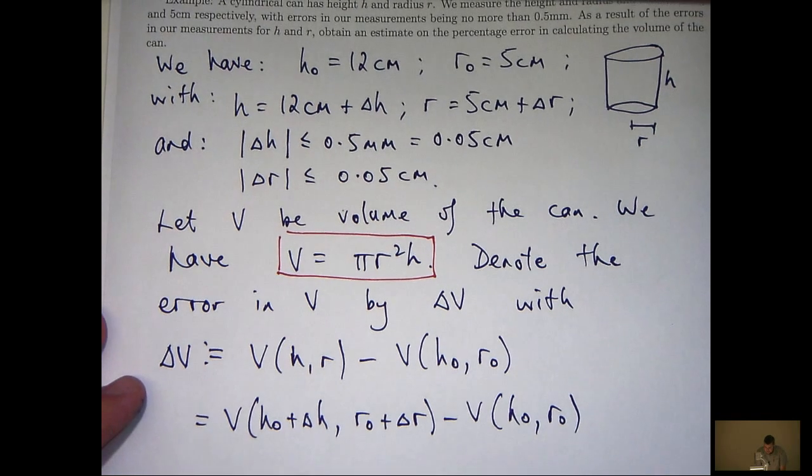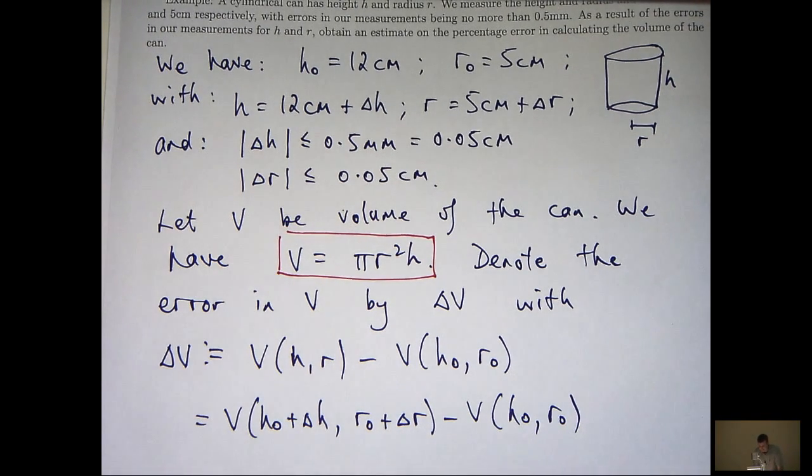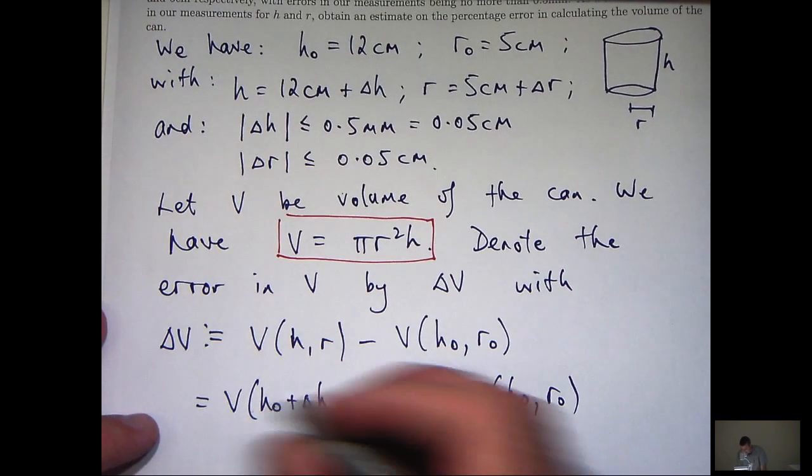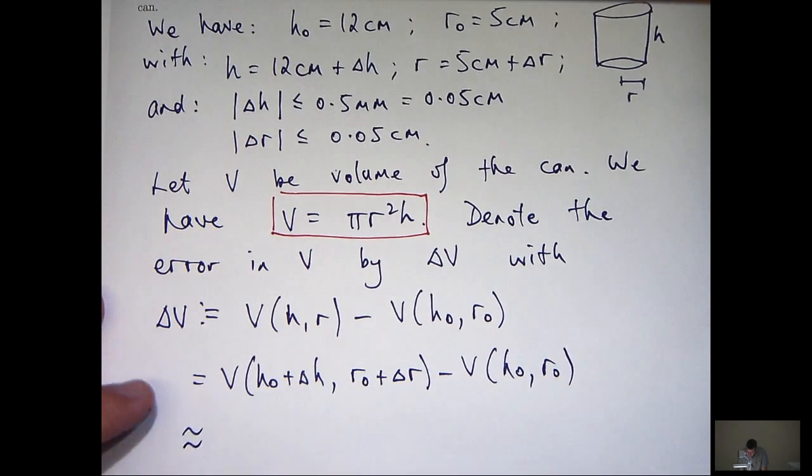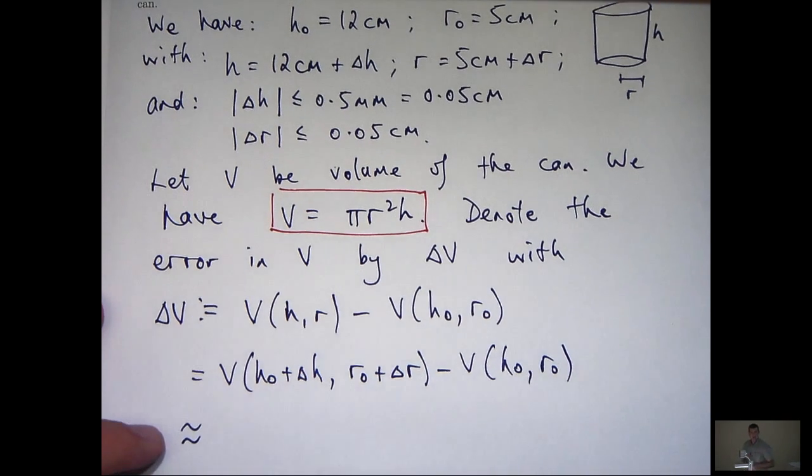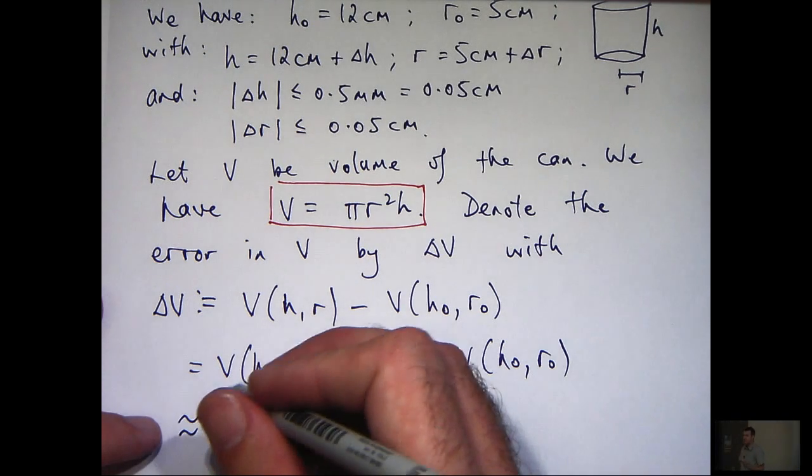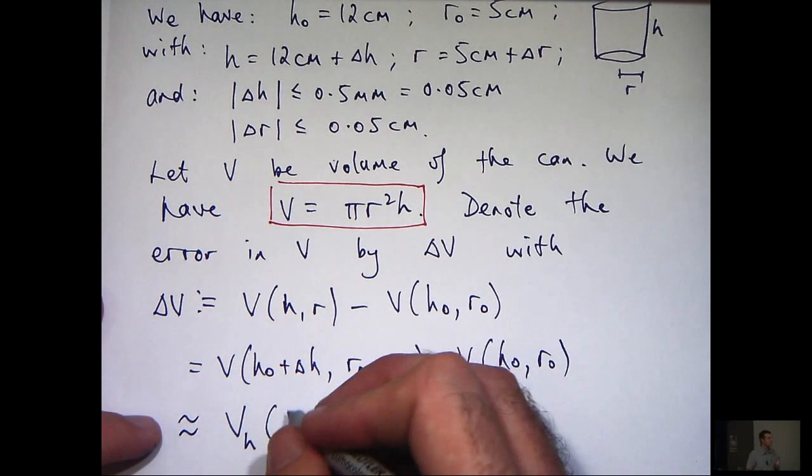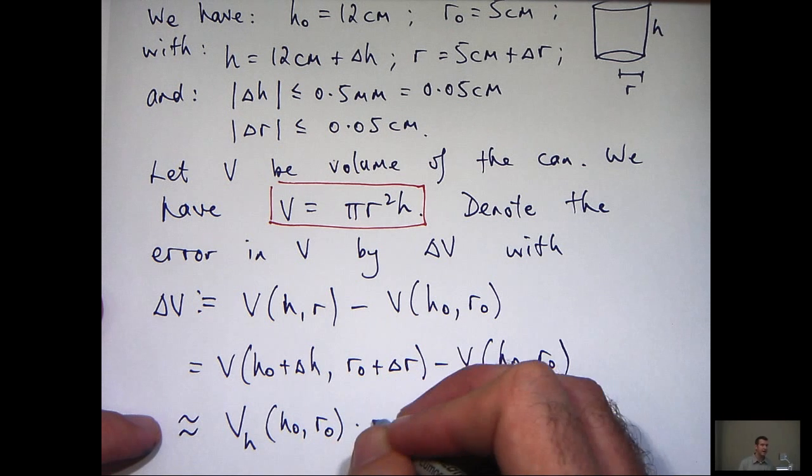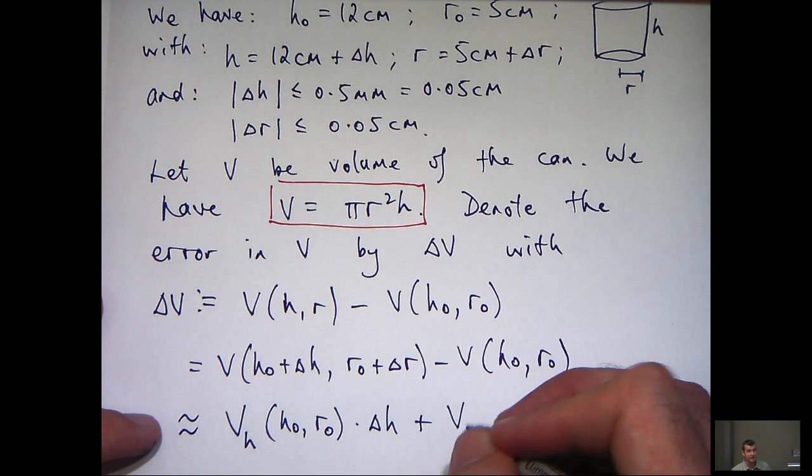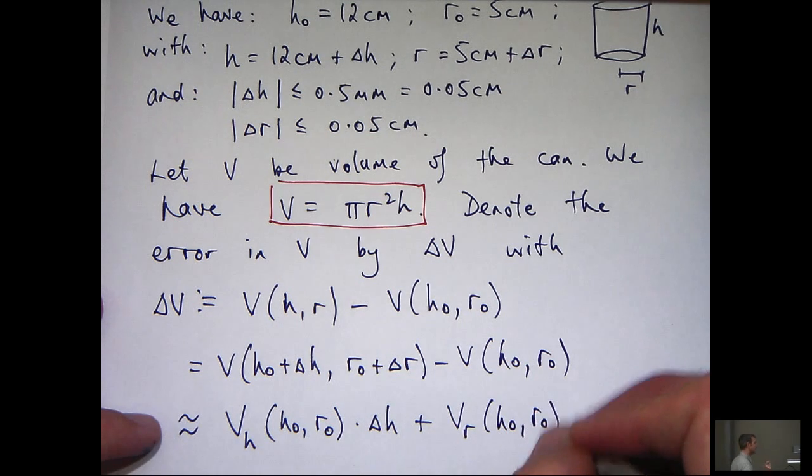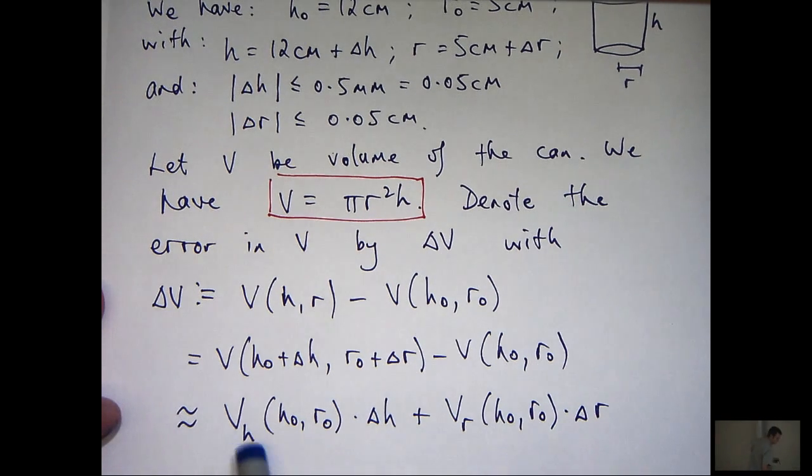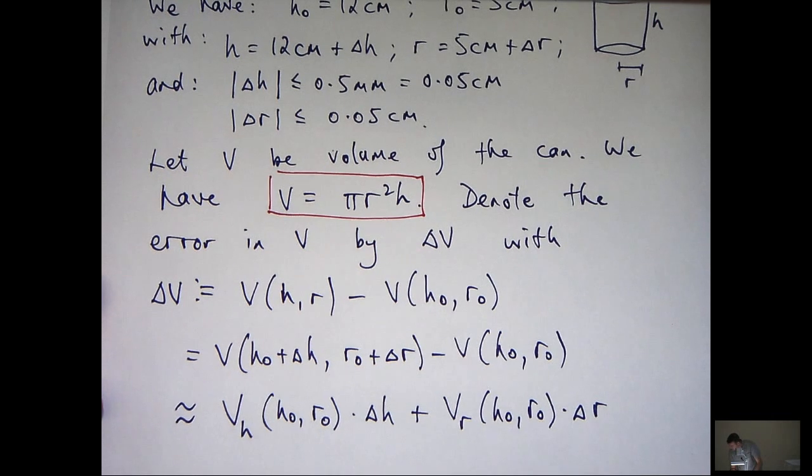Well, what we can actually do here is use a Taylor polynomial approximation. It's a linear approximation. So essentially, we can form an approximately equal to and introduce partial derivatives here. The subscripts mean V sub h means dvdh evaluated at this point, dvdr evaluated at this point.